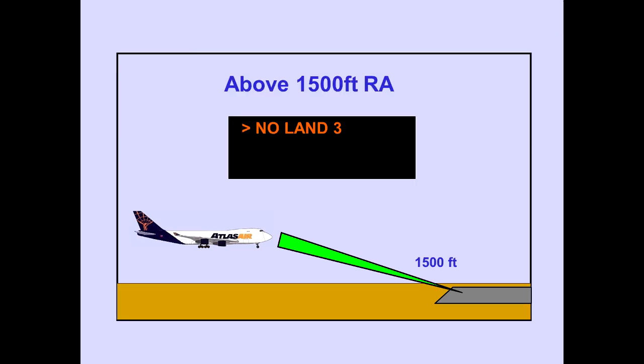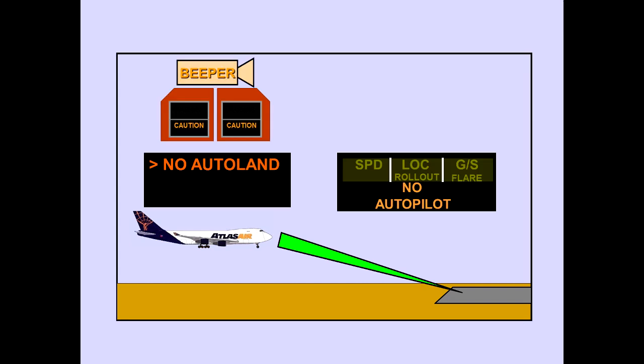Above 1,500 feet radio altitude, the ICAS advisory message NO LAND 3 indicates that one of the autopilot systems has failed. The ICAS caution message NO LAND 3 indicates that two or three autopilot systems have failed and an automatic landing is not possible. NO LAND 3 is also displayed on the PFD.